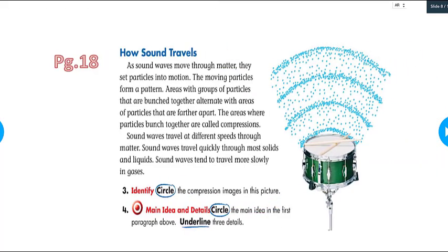So look at this drum and with this stick, when we are making a sound, the vibration is traveling through the air, and the particles are in motion. If you look at the picture, we can see a pattern. We can see areas with a group of particles that are bunched, grouped together, and they are alternating with areas of particles that are farther apart. This one we call compression, when the particles are bunched together, and the sound waves will travel at a different speed through matter.